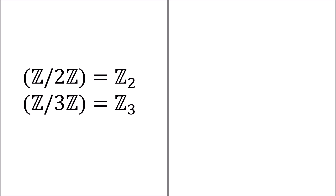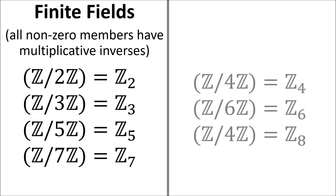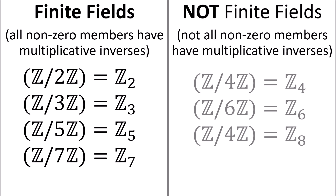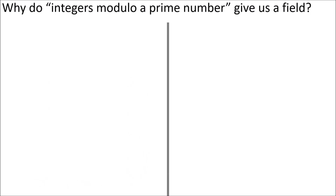For the integers mod 2, 3, 5, and 7, all non-zero members of these sets have multiplicative inverses, so we can define how to do division between any two non-zero numbers — this means these are all finite fields. The integers mod 4, 6, and 8 are not finite fields, because not all members have multiplicative inverses. The trick is that if we do the integers mod a prime number, then all non-zero numbers are guaranteed to have a multiplicative inverse. 2, 3, 5, and 7 are all prime numbers, so these sets are finite fields.